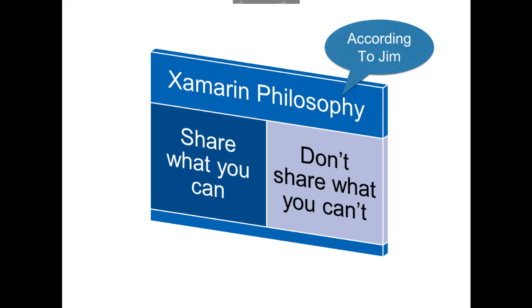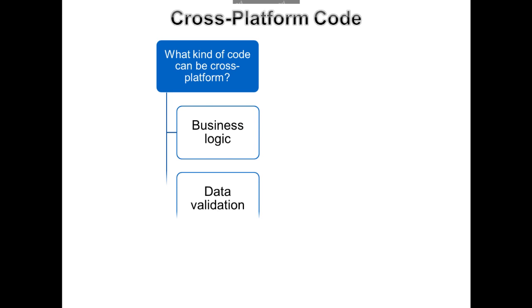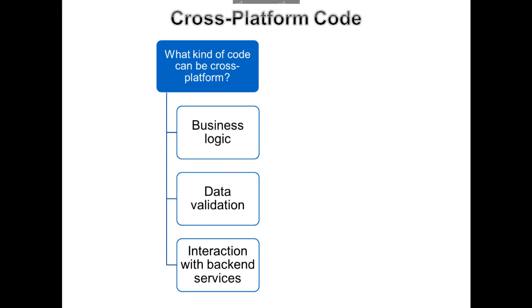Working in Xamarin effectively really requires that you think about that issue. So what kind of code can be cross-platform? It really breaks down into three general categories: business logic, data validation, and interaction with your back-end services. For example, I'm working with a project where we use the Parse back-end service for data storage, messaging, and so forth. The code that interacts with that can be used on both platforms. In most cases, code you've already written for an ASP.NET application or a desktop .NET application — most of that code can just be dropped right into your Xamarin project and run on iOS or Android.